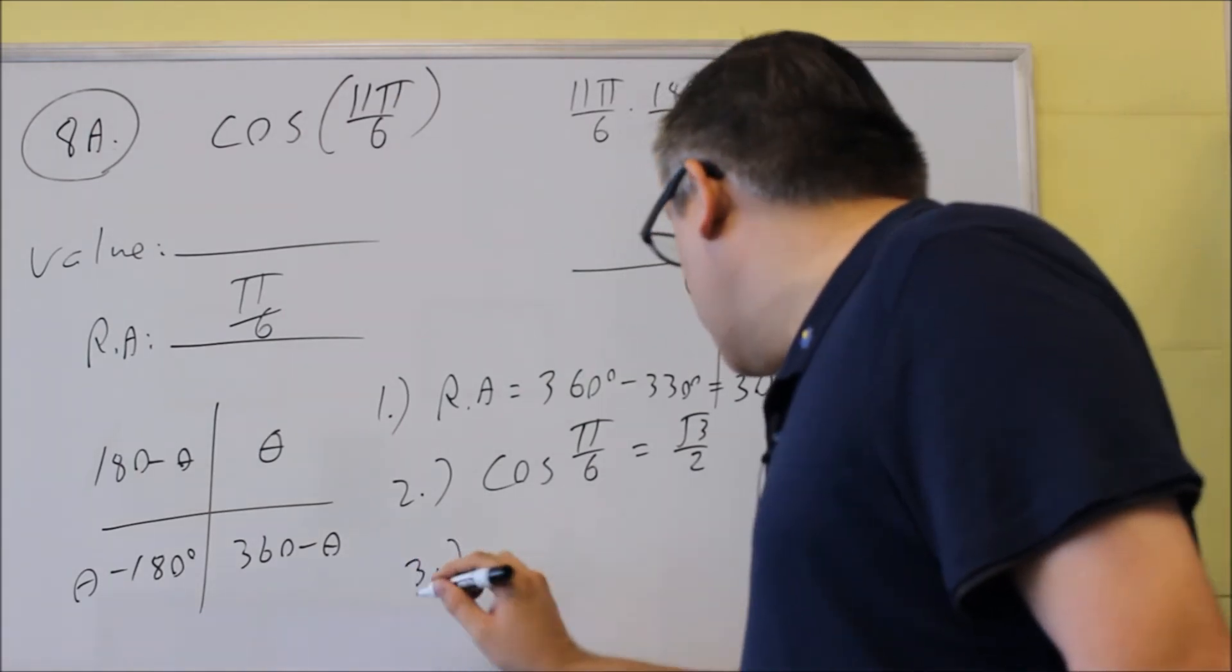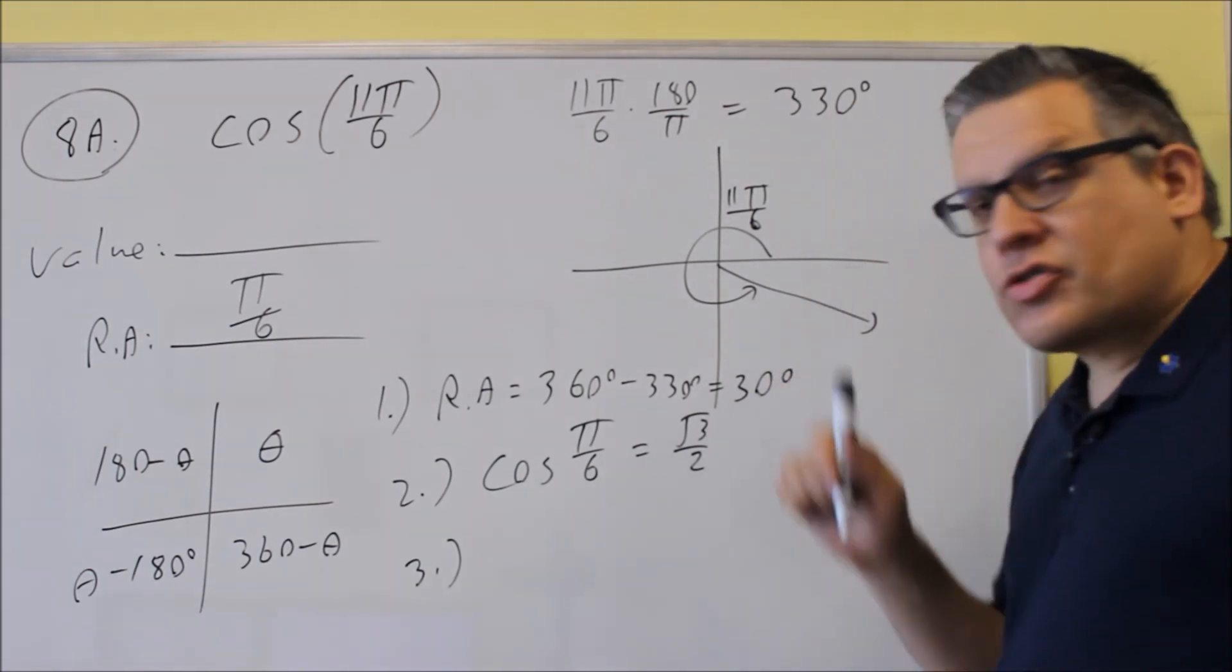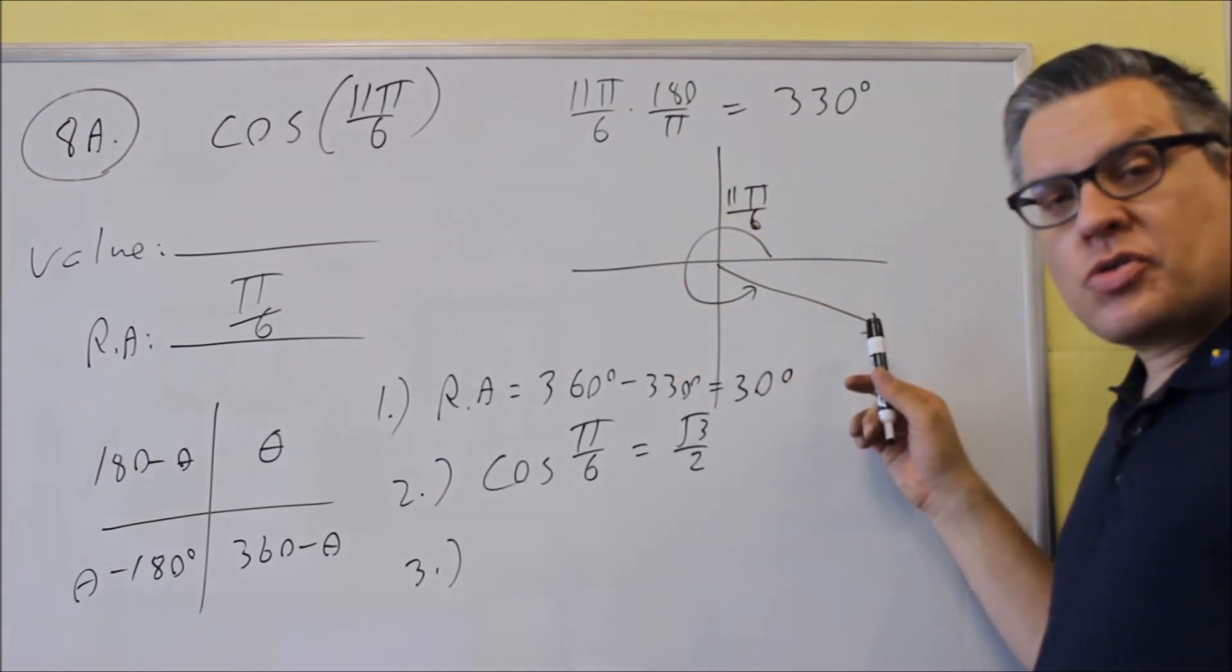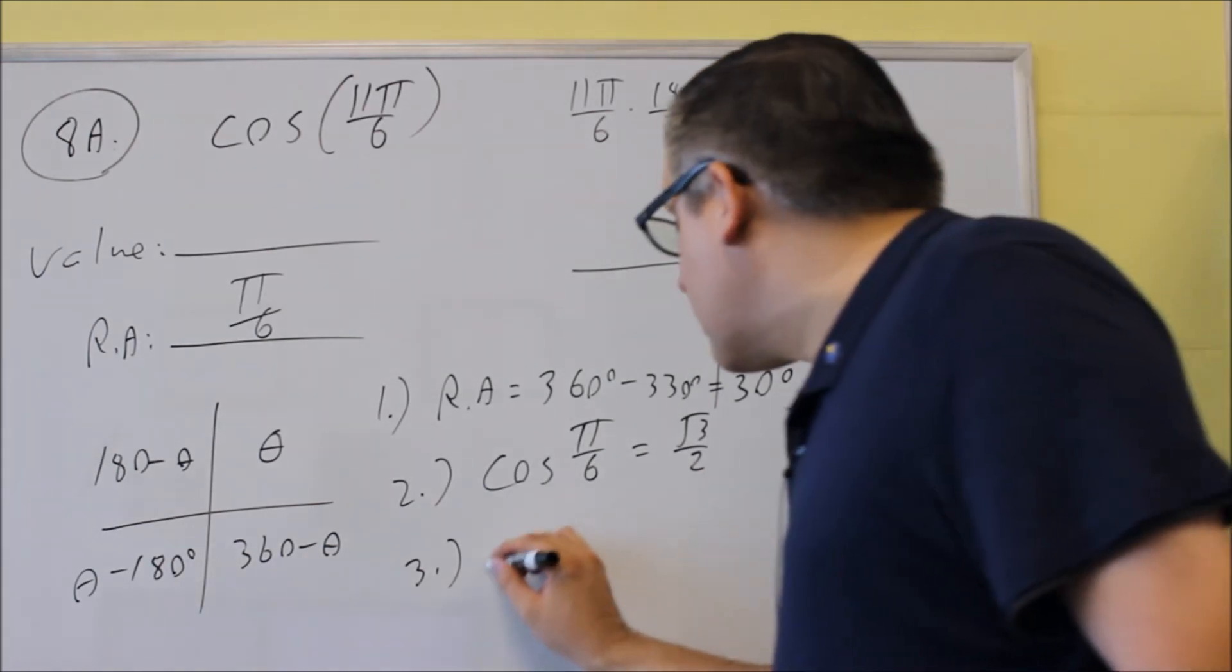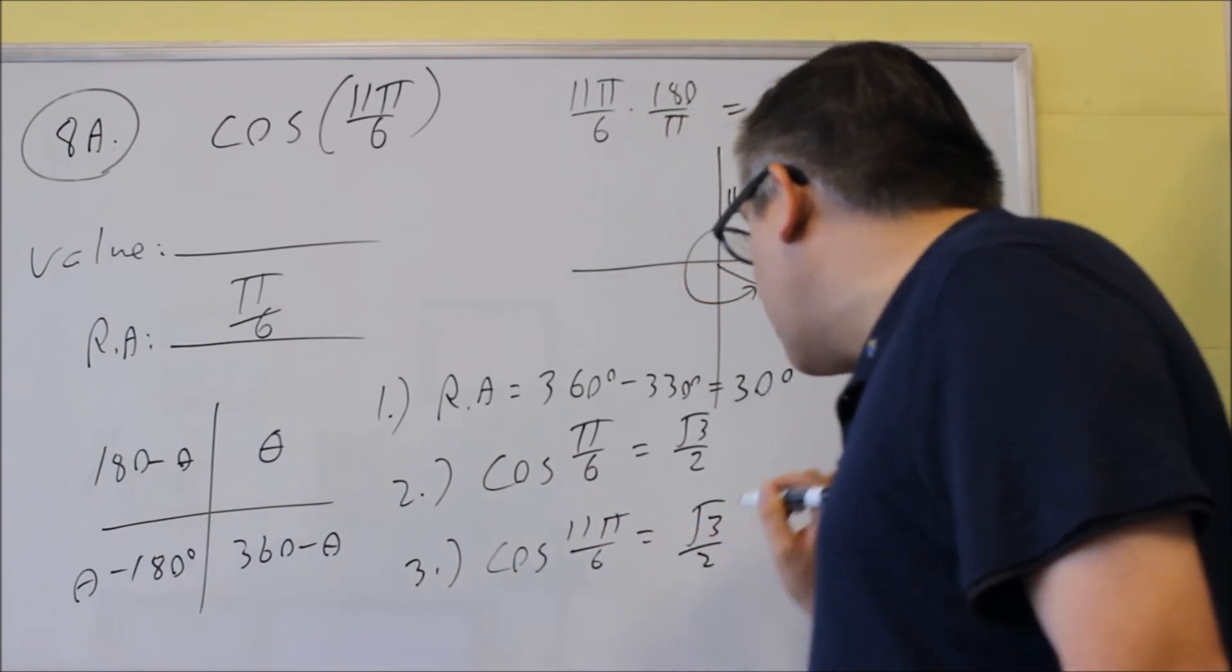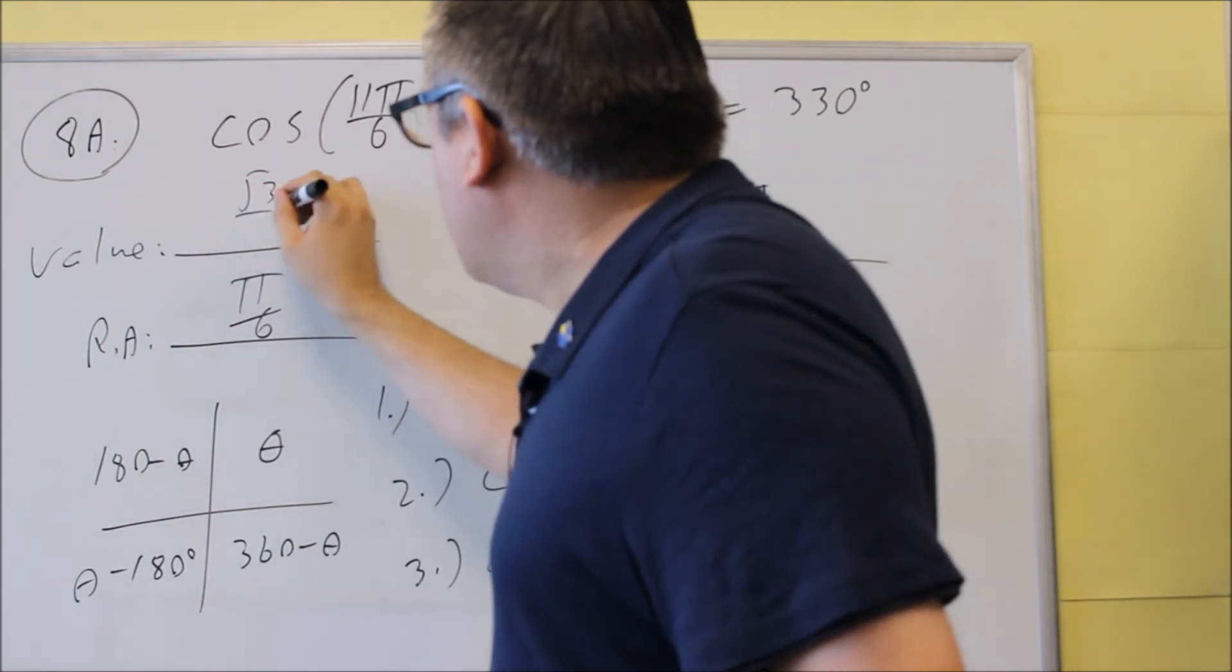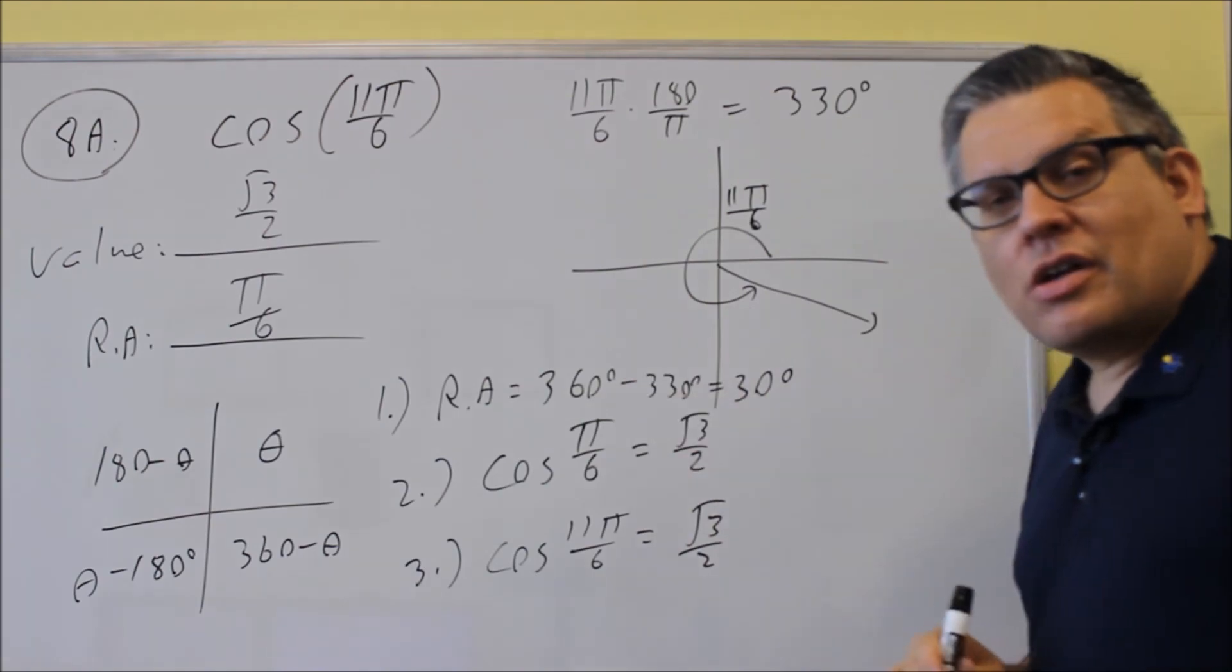Step number 3 is you're going to apply the appropriate sign depending on which quadrant you're in. We're going to use all students take calculus for that one. We're in the fourth quadrant. All students take calculus means in this quadrant, cosine's positive, everything else is negative. So I don't have to make a sign adjustment. I can say that cosine of 11 pi over 6 is equal to, should still remain positive there because cosine's positive in the fourth quadrant. So square root of 3 over 2 would be the exact value. Don't use decimals. Make sure you use the exact values.